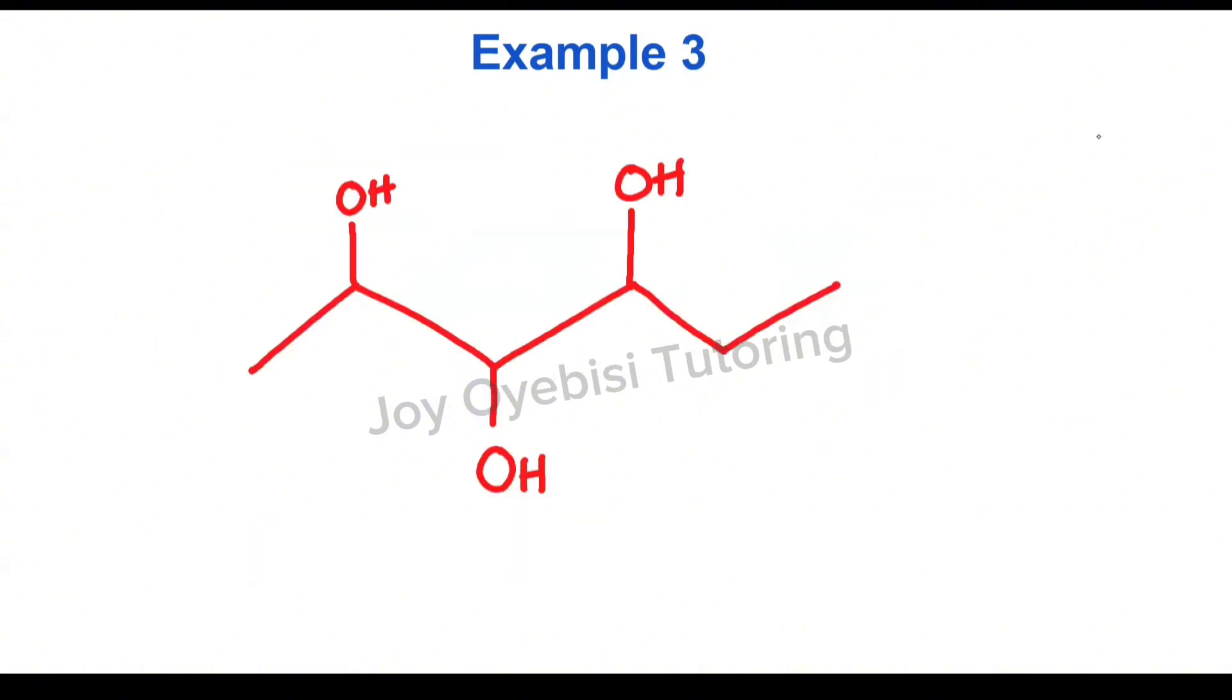Now, for this example, we have multiple OH attached. So what you would do is, again, identify your longest continuous chain that includes all the OHs, and then count from the side that gives all of them the lowest numbers possible. So if we start from here, this is going to be 1, this is 2, 3, 4, 5, then 6. Now, I'm going to count from the other side and see if that's better. This is 1, 2, 3, this will be 4, 5, and then 6.